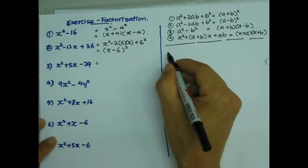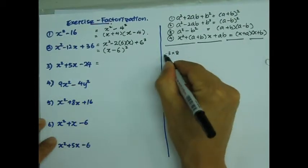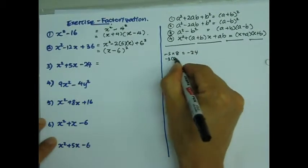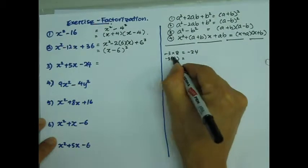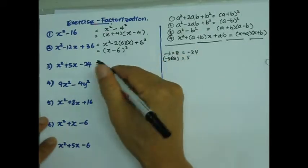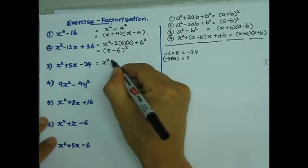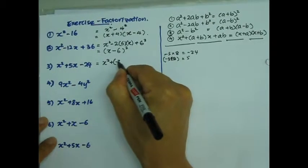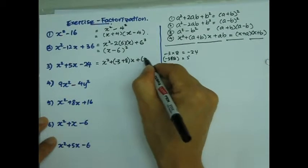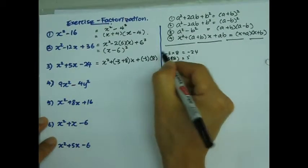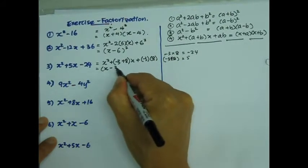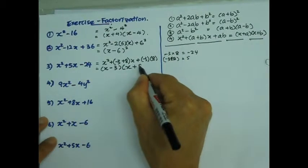We have a few choices. One of them is negative 3 and 8. Negative 3 and 8 give me negative 24, and negative 3 plus 8 give me 5. So I'm going to try that one. That's going to be x squared plus negative 3 plus 8x plus negative 3 times 8. That would just work. This would be x minus 3 times x plus 8.